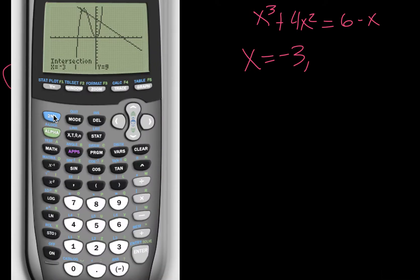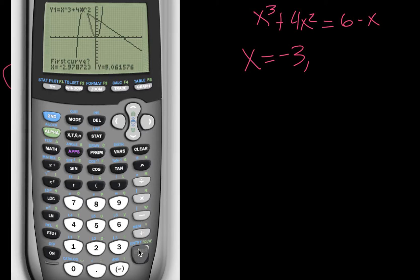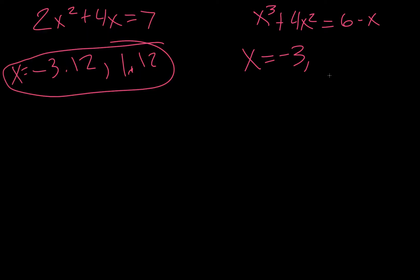Okay, go through the same process, second, calc, a shortcut, we can just hit 5, and it'll go to the intersect. So first curve, second curve, then I'm going to guess, and it's negative 2.